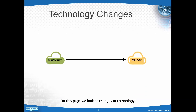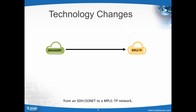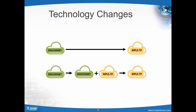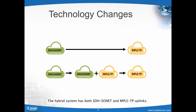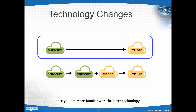On this page, we look at changes in technology. One approach for this change is to convert directly from an SDH Sonet to an MPLSTP network. The other approach is for SDH Sonet to convert to the so-called hybrid system. The hybrid system has both SDH Sonet and MPLSTP uplinks. You can initially run critical services over SDH Sonet, giving you time to migrate critical services from SDH Sonet to MPLSTP once you are more familiar with the latter technology.